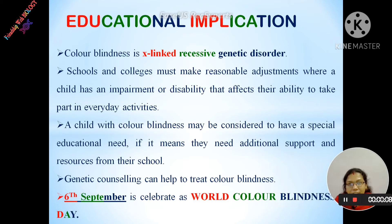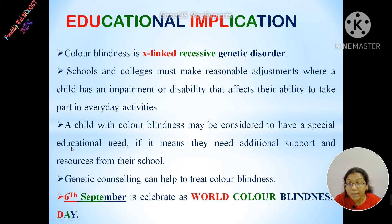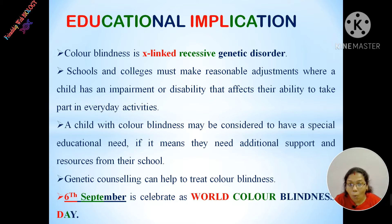Color blindness is an X-linked recessive genetic disorder. Schools and colleges must make reasonable adjustments where a child has an impairment or disability that affects their ability to take part in everyday activities. A child with color blindness may be considered to have a special educational need if they require additional support and resources from their school. Genetic counseling also helps. Nowadays people are more aware about color blindness, and for that reason, September 6th is celebrated as World Color Blindness Day.